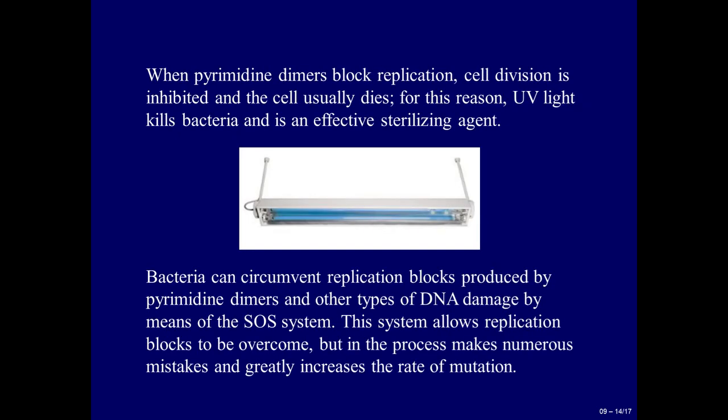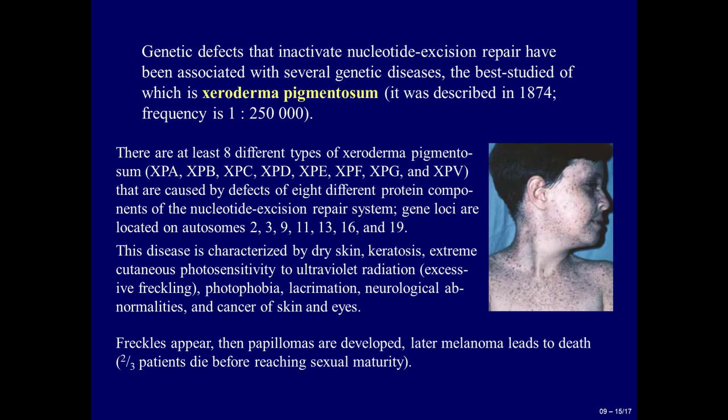When pyrimidine dimers block replication, cell division is inhibited and the cell usually dies. For this reason, ultraviolet light kills bacteria and is an effective sterilizing agent. Bacteria can circumvent replication blocks produced by pyrimidine dimers and other types of DNA damage by means of the SOS system. This system allows replication blocks to be overcome, but in the process makes numerous mistakes and greatly increases the rate of mutation. Genetic defects that inactivate nucleotide excision repair have been associated with several genetic diseases, the best studied of which is xeroderma pigmentosum, described in 1874, with a frequency of 1 in 250,000.